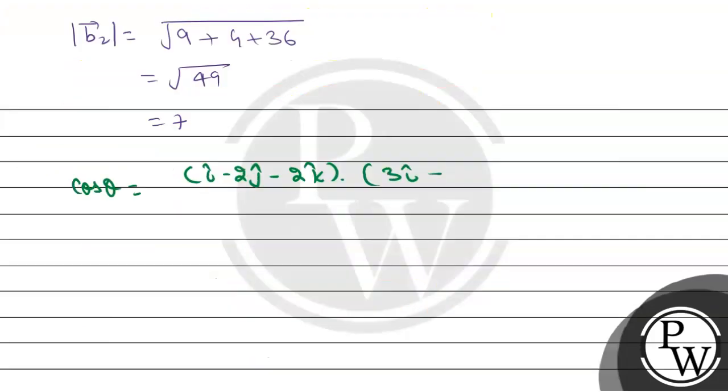3 i cap plus 2 j cap minus 6 k cap divided by 3 multiplied by 7. Dot product gives us 3 minus 4